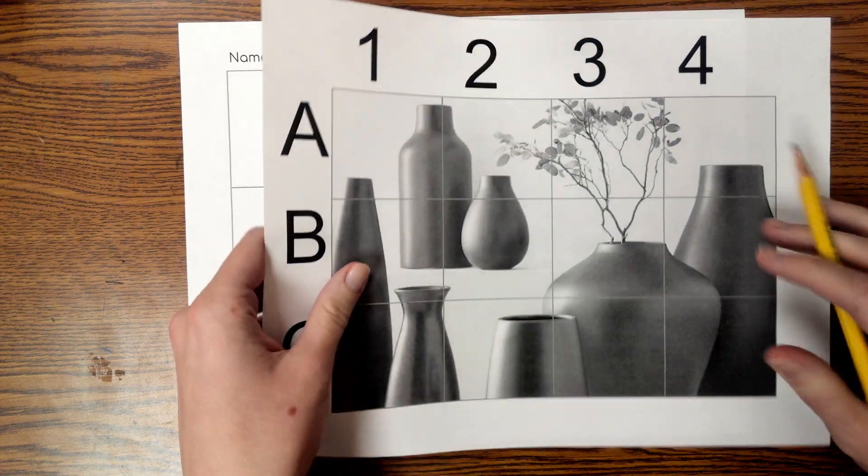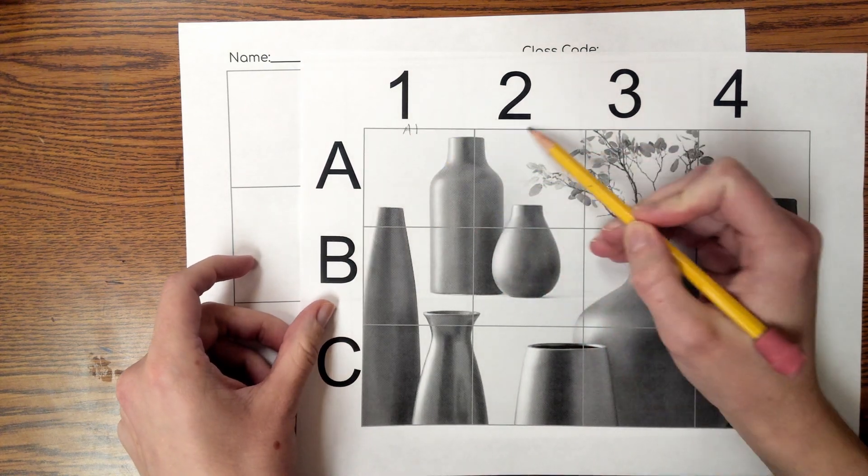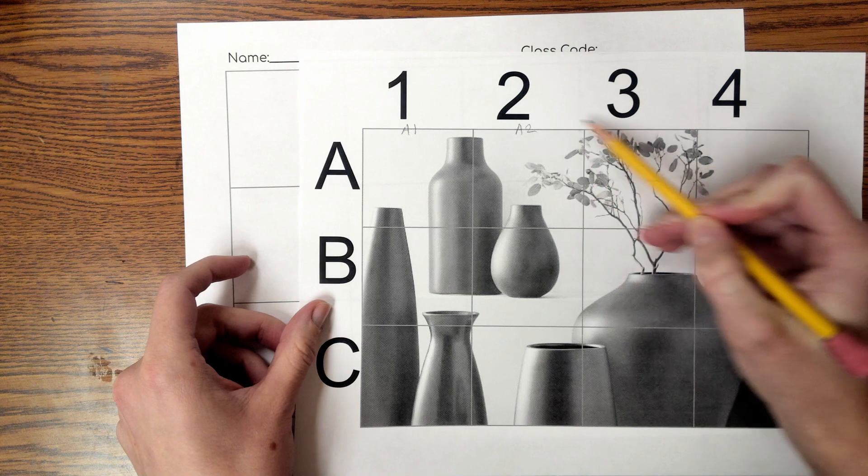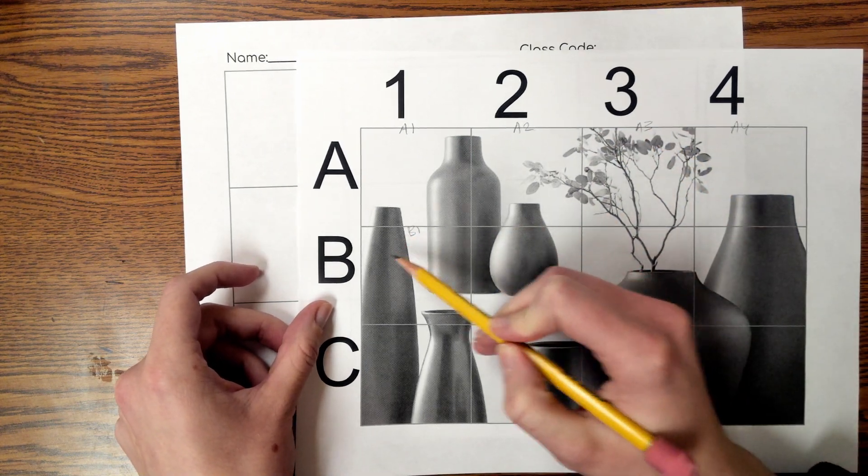With whichever picture you've chosen, there are labels for each grid square. So, for example, this is grid square A1, this is grid square A2, A3, A4, B1, etc.